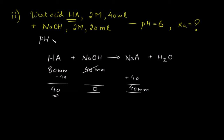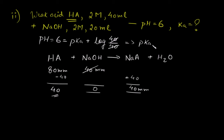So pH = pKa + log(salt/acid). Since salt and acid are both 40 millimoles in the same volume, log(40/40) = log(1) = 0. Therefore pH = pKa = 6. This implies Ka = 10^(−6). This time we found Ka, whereas in the last question we found pH — the question type is the same but what we solve for is different.